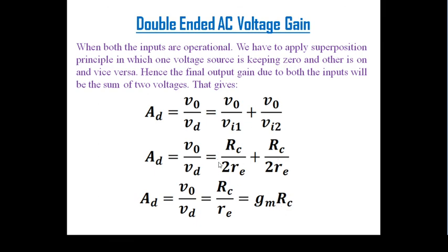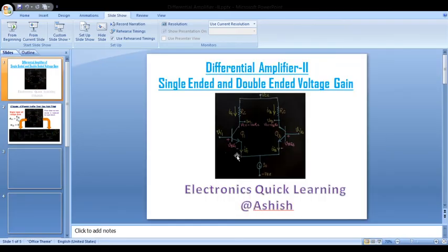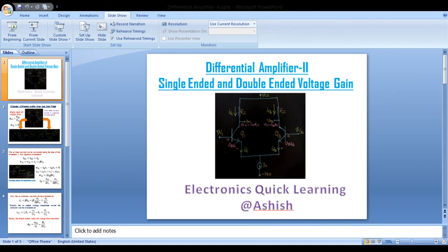So RC divided by re equals gm times RC, since 1/re is simply gm (or alpha/re). This is the double-ended AC voltage gain, and the single-ended gain is half of this. The summary of steps: draw the hybrid pi model, find ib, find IC equals beta*ib, find output voltage IC*RC, and compute the voltage gain. For double-ended, apply superposition for Q1 and Q2 separately and add the results to get gm*RC.